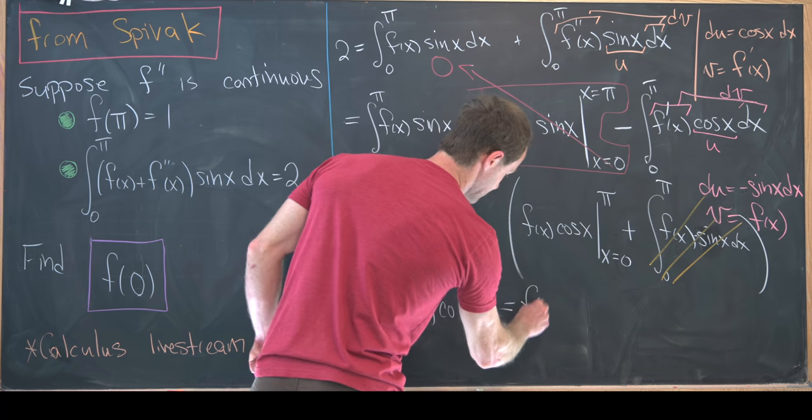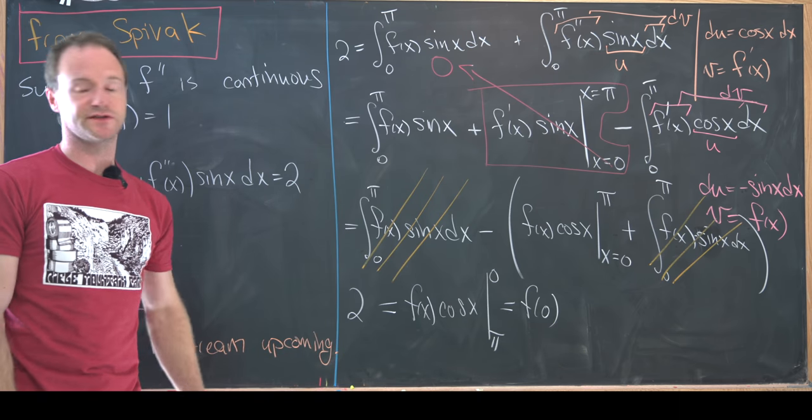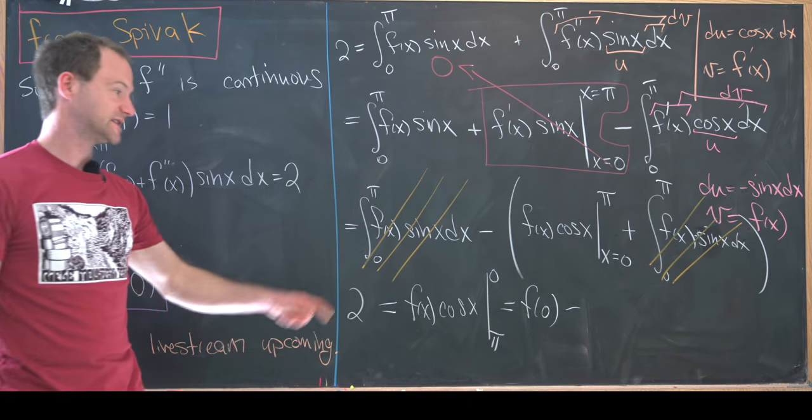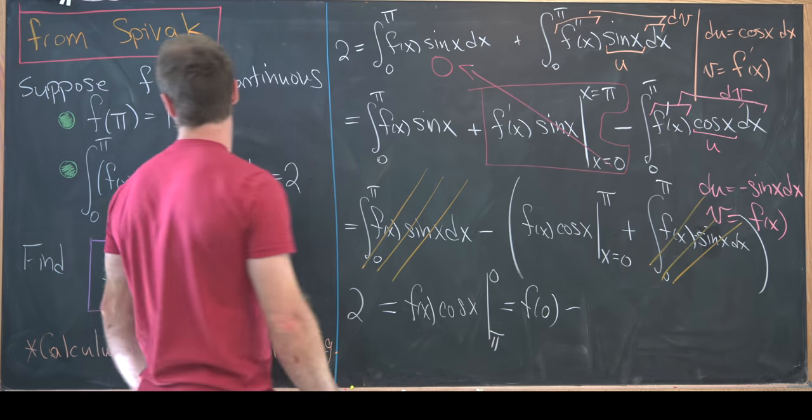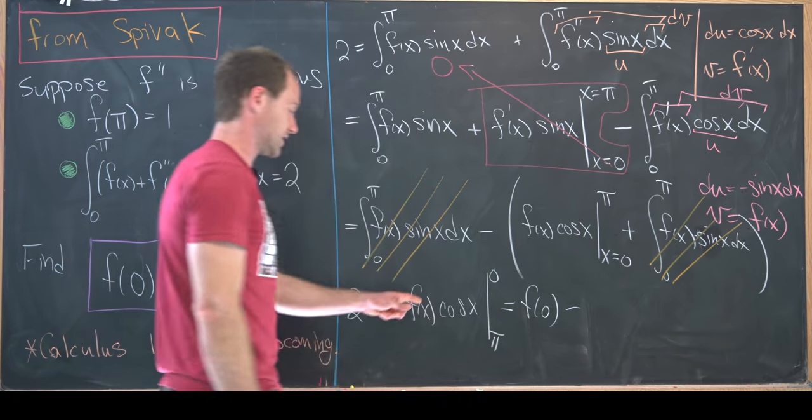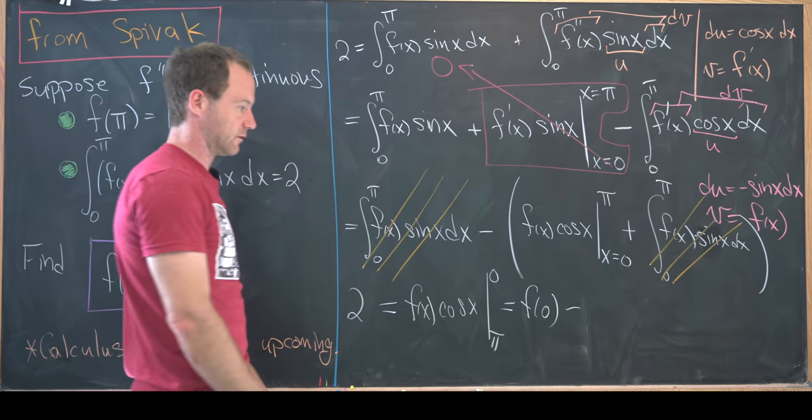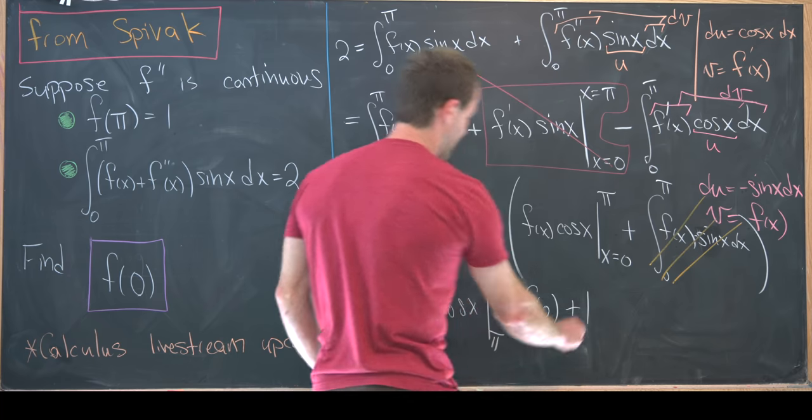So notice that this is f(0) times cos(0), but cos(0) is one minus f(π) times cos(π). But we know f(π) is one and cos(π) is in fact equal to negative one. So that means we've got a plus one here.